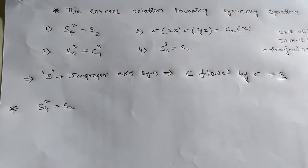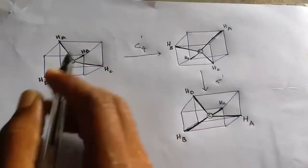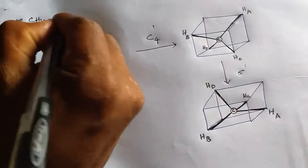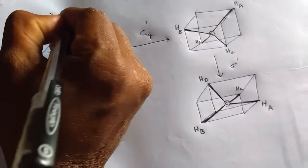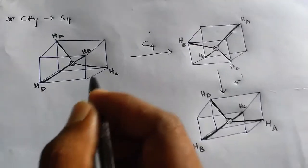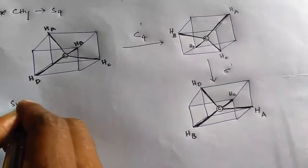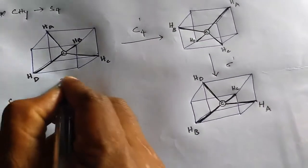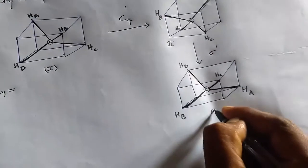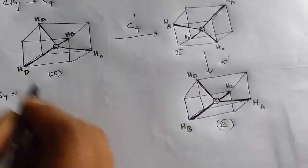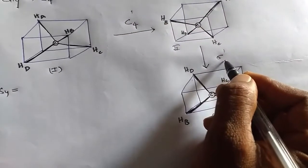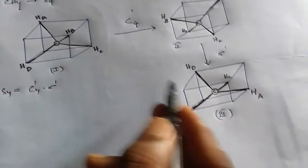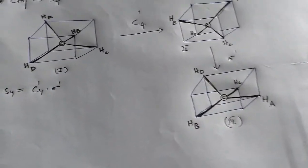To check this, I'm giving the example of methane, CH4. CH4 has an S4 improper axis of symmetry. To get the identity operation E for S4, we need one C4 operation followed by one sigma (σ) plane operation. So S4 = C4¹ · σ₁.